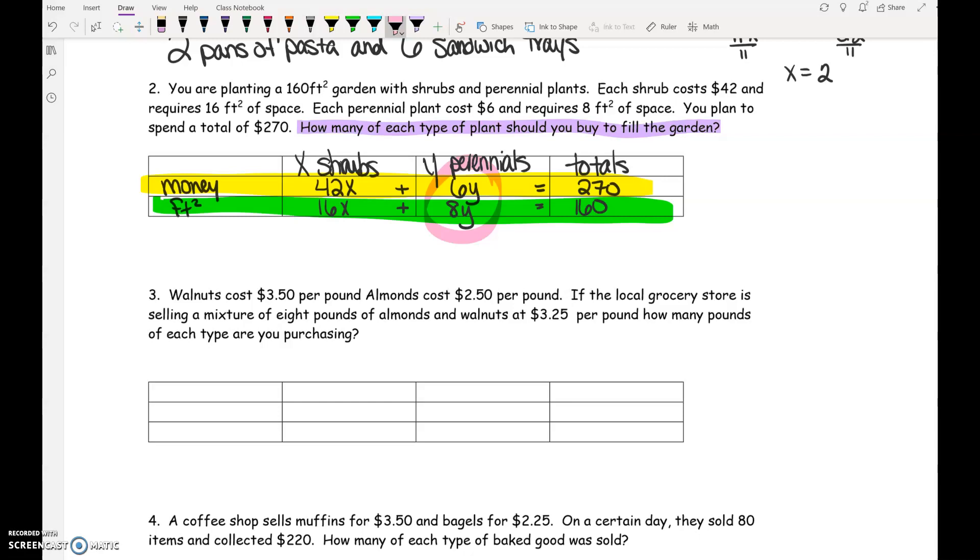I would probably do elimination. And I would focus on trying to get my Y's to cancel. So 6 and 8. If you just want to not think about it very much, 6 times 8 is 48. So you could make the top one be 48Y and the bottom one be negative 48Y. Or is there another number that you can multiply by? 24. So we could multiply the top by 4 to get 24Y and the bottom by negative 3 to get negative 24Y. So then our goal would be to have 24Y and negative 24Y because then when we added the two equations together, they would cancel.